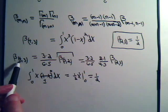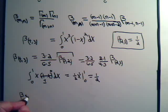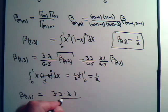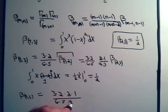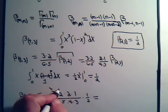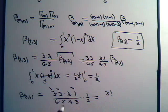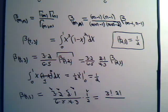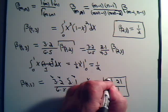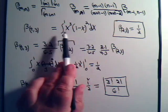Going back to our result, beta(4,3) equals 3 times 2, times 2 times 1, divided by 6 times 5 times 4 times 3, times 1/2. The numerators give us 3 factorial times 2 factorial, and the denominator combines to 6 factorial. So beta(4,3) = 3! · 2! / 6!, which is the solution to this integral.